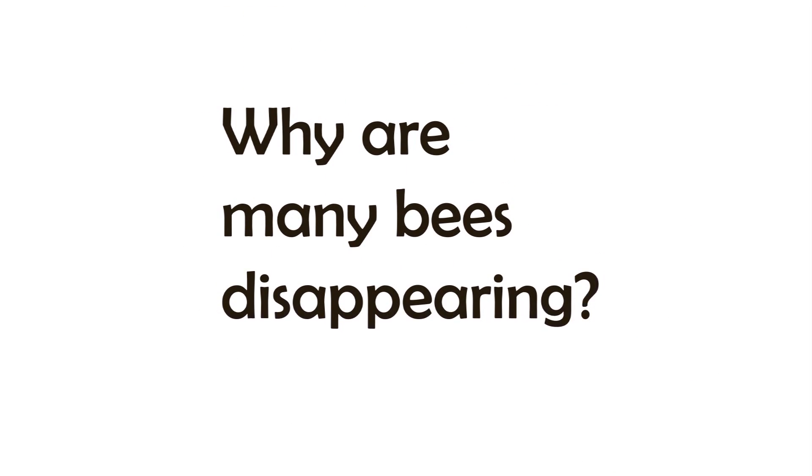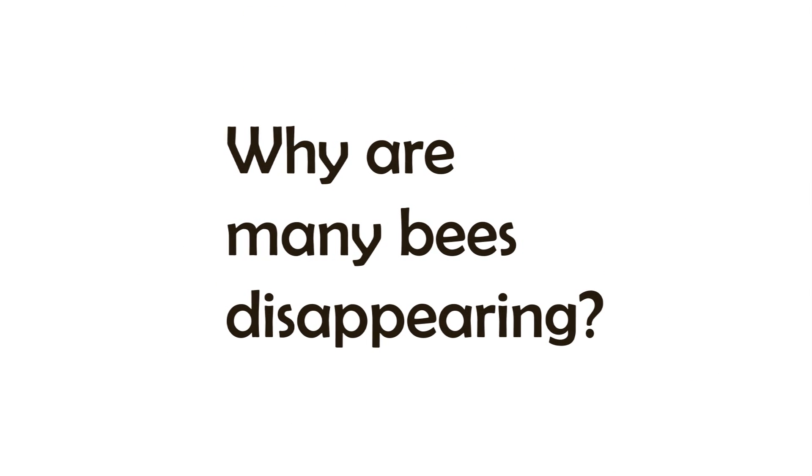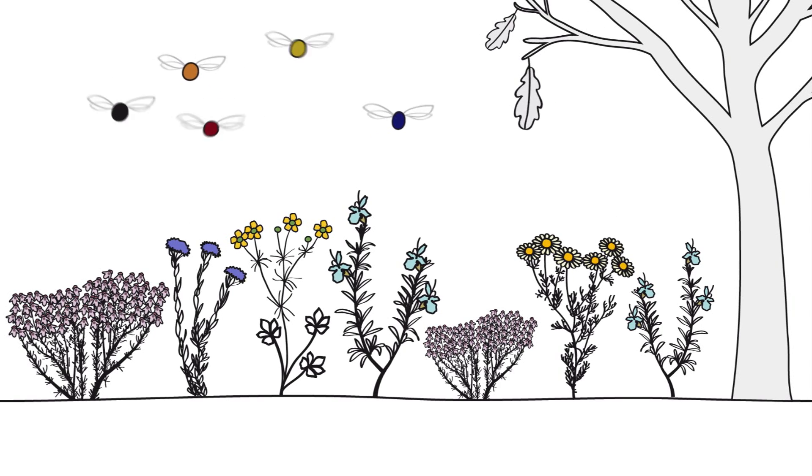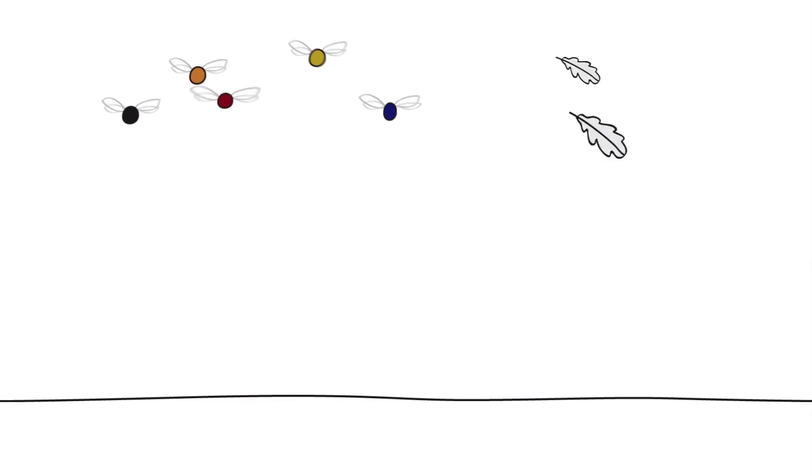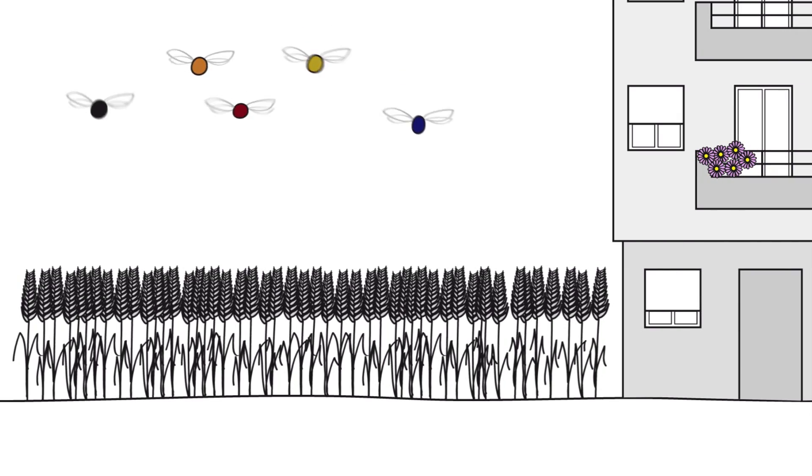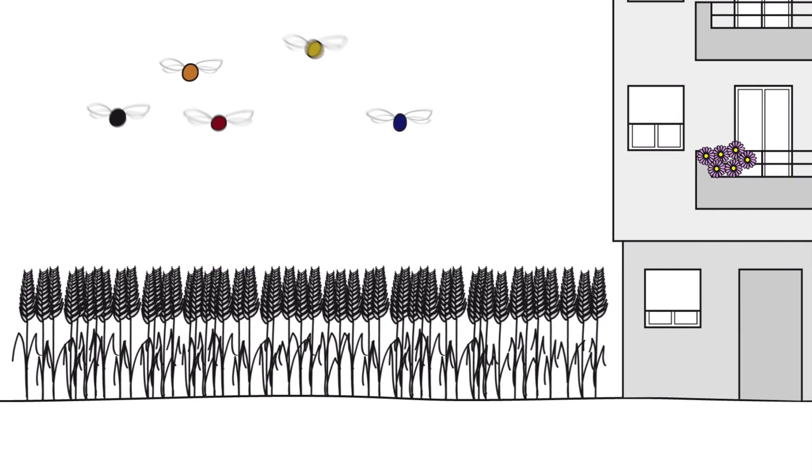Unfortunately, many of them are disappearing. But why? Well, the problem is complex. The main cause is that we are destroying the places where they live. We have turned woods and grasslands into crop fields and cities where many wild species cannot survive.